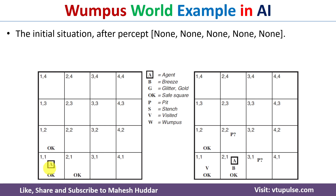The reason is that while defining the Wumpus World, we have said that square (1,1) is the safest square. In (1,1), the Wumpus is not present, the pit is not present, and the gold is also not present. So the agent will not perceive stench, breeze, glitter, bump, or scream. This means the adjacent squares (2,1) and (1,2) are safe, and we have marked them as OK.